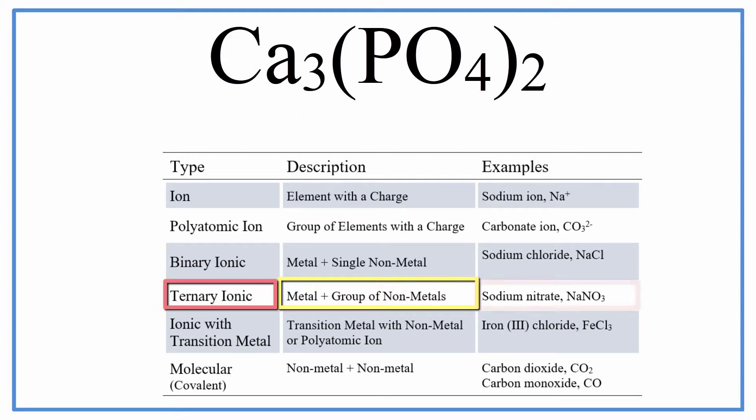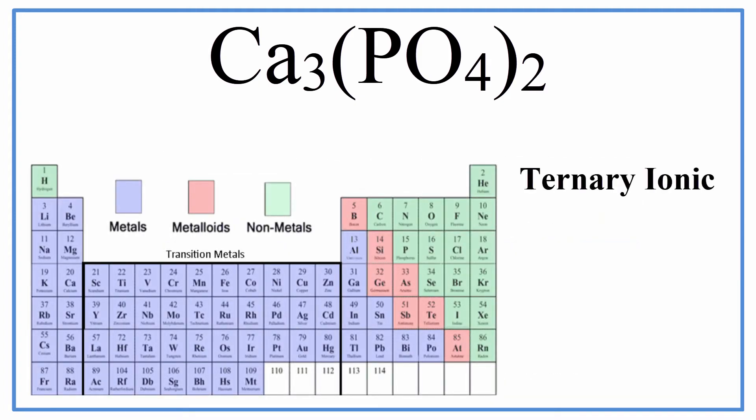An example of that would be sodium nitrate, NaNO3. Now that we know we have a ternary ionic compound, we can follow the rules for naming ternary ionic compounds.